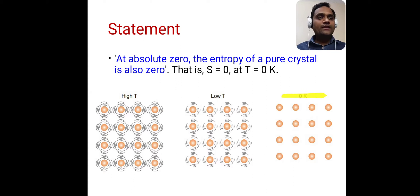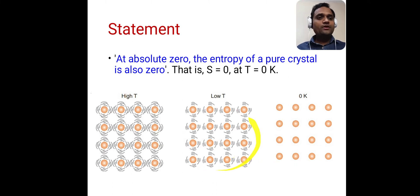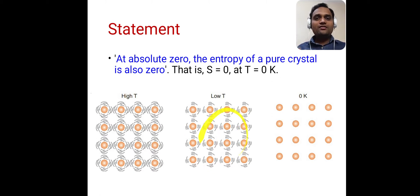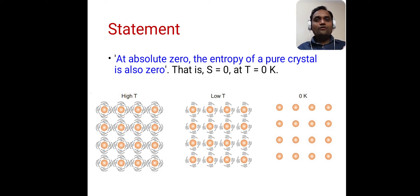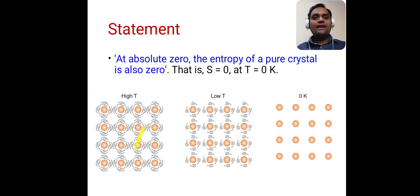Here, at zero Kelvin temperature, if you consider this system, it is a perfect system. If you consider a system at low temperature, that system has some molecular vibrations. At zero Kelvin, there are no molecular vibrations. When we increase temperature, even at low temperature, molecules have some molecular vibrations. At zero Kelvin, entropy is zero; at lower temperature it has some entropy; and at higher temperature, the entropy is even more.